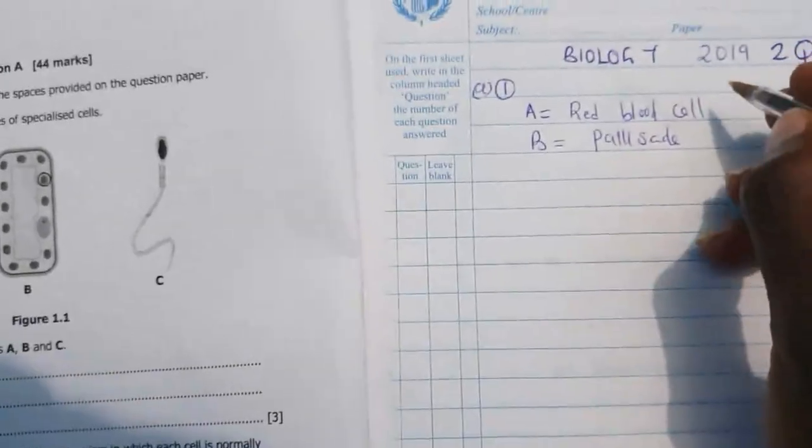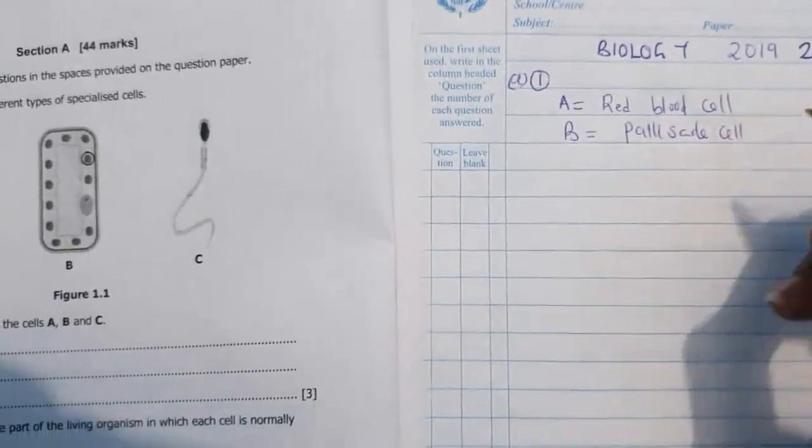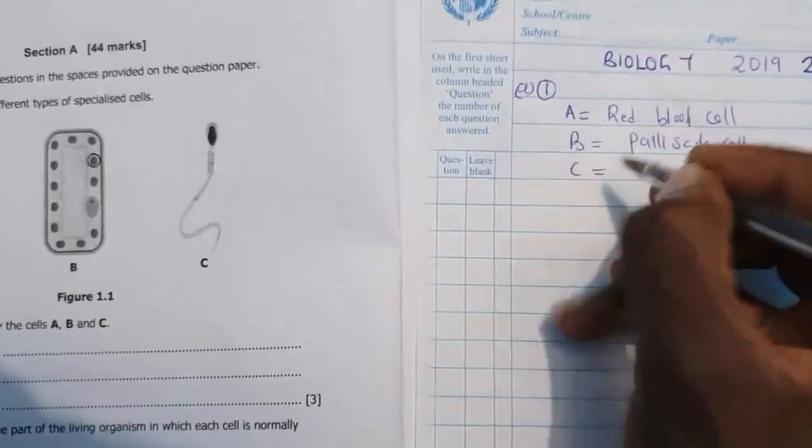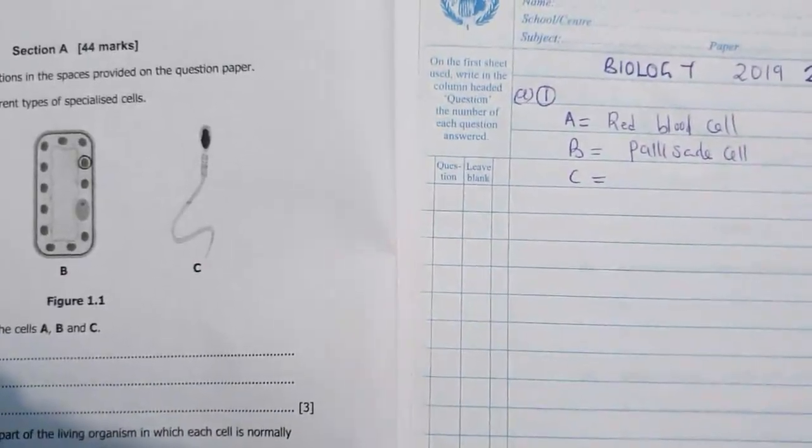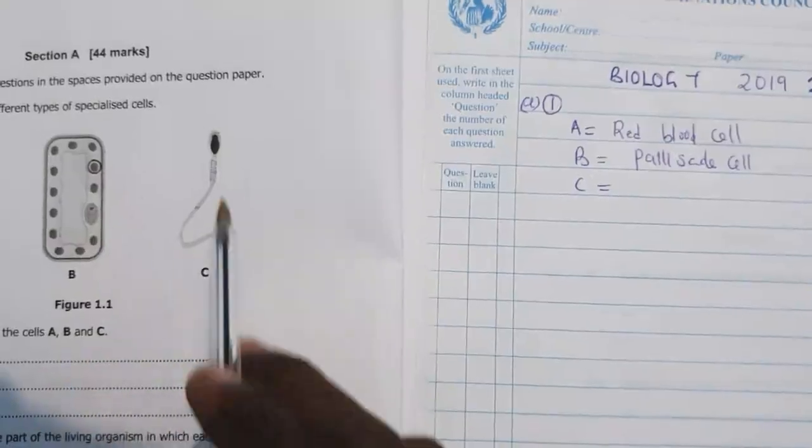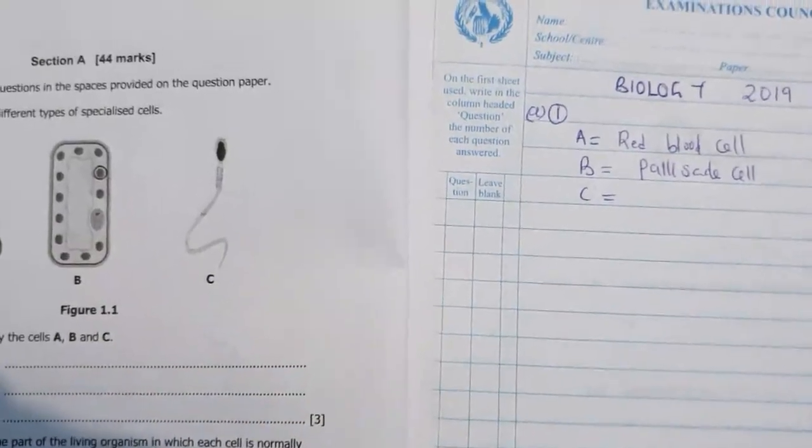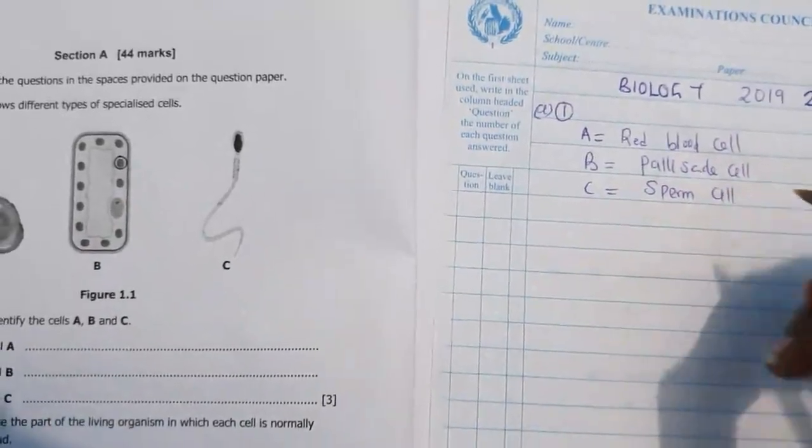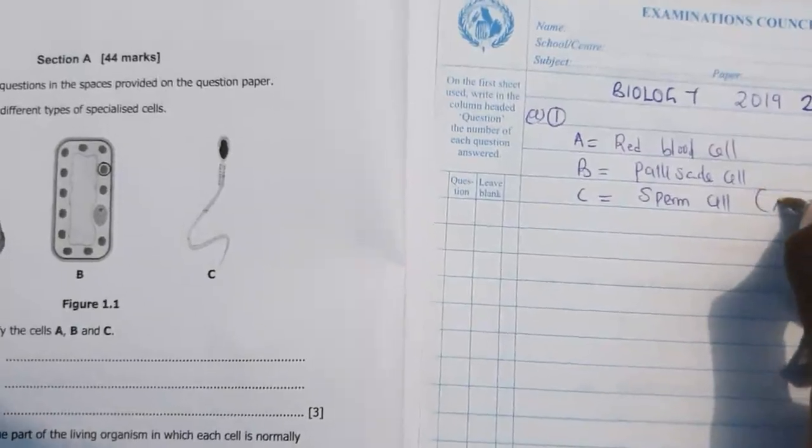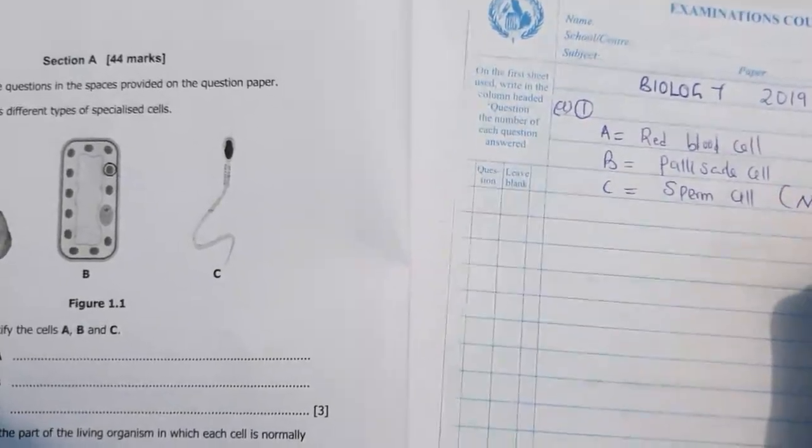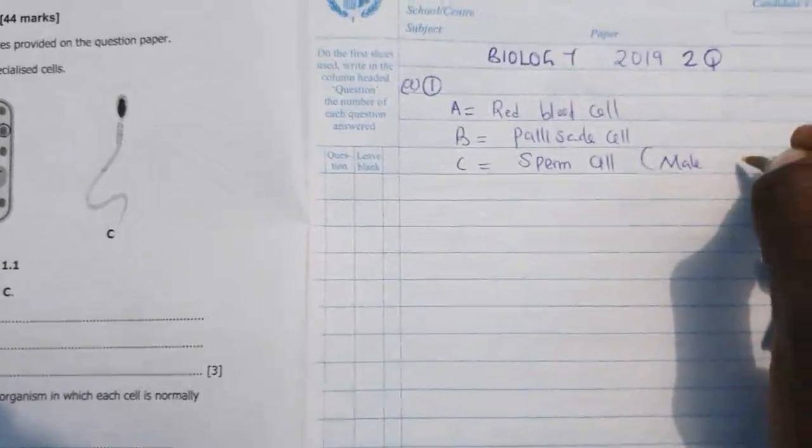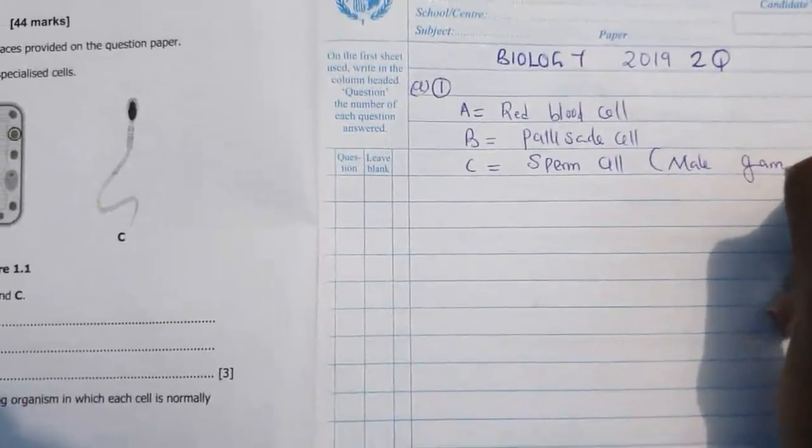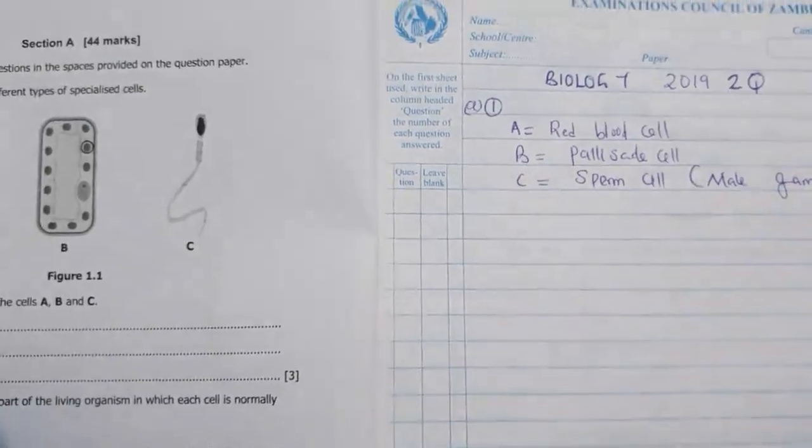Then cell C, we look at cell C. Okay, it's an animal cell, it's a sperm cell. Okay, it's a sperm cell, or it's a male gamete. Okay, it's all a problem, but its name is a sperm cell, so you equate by this name.